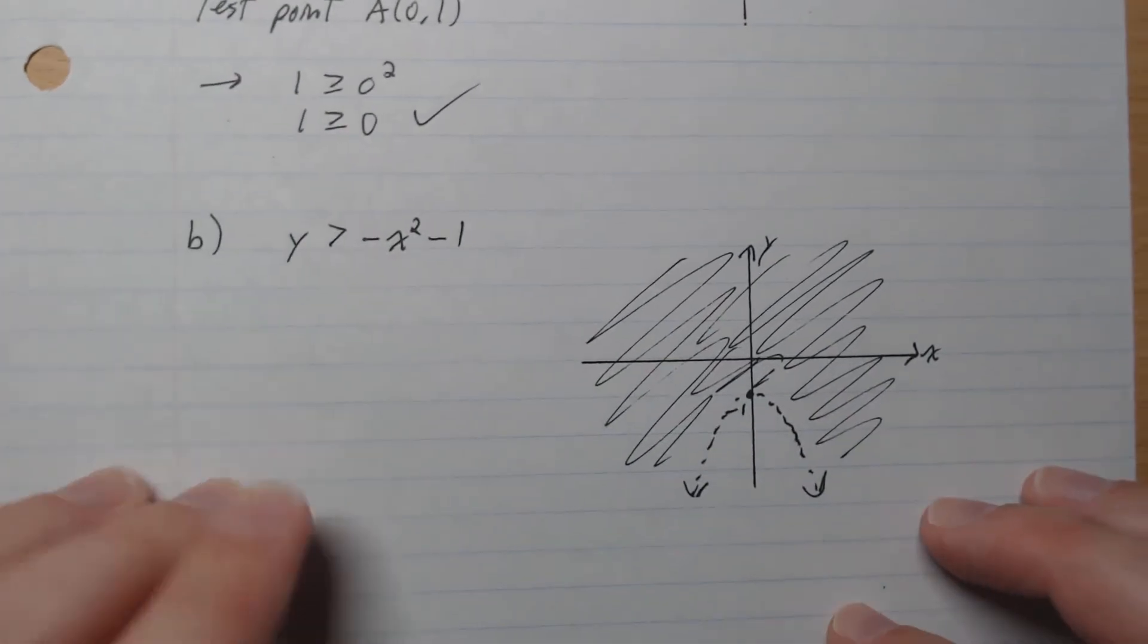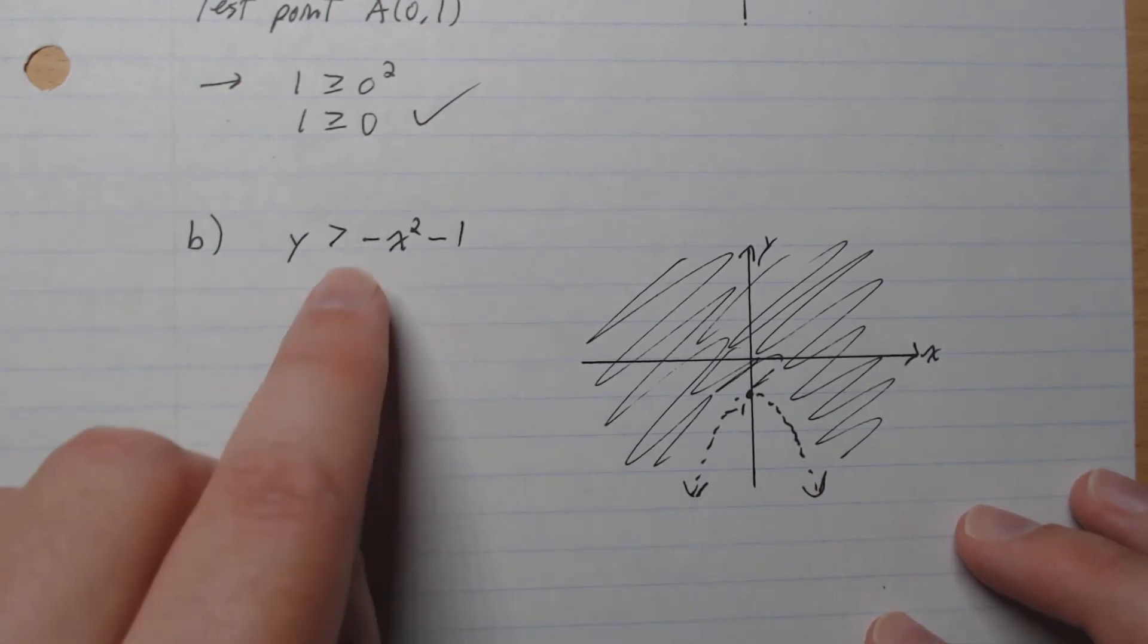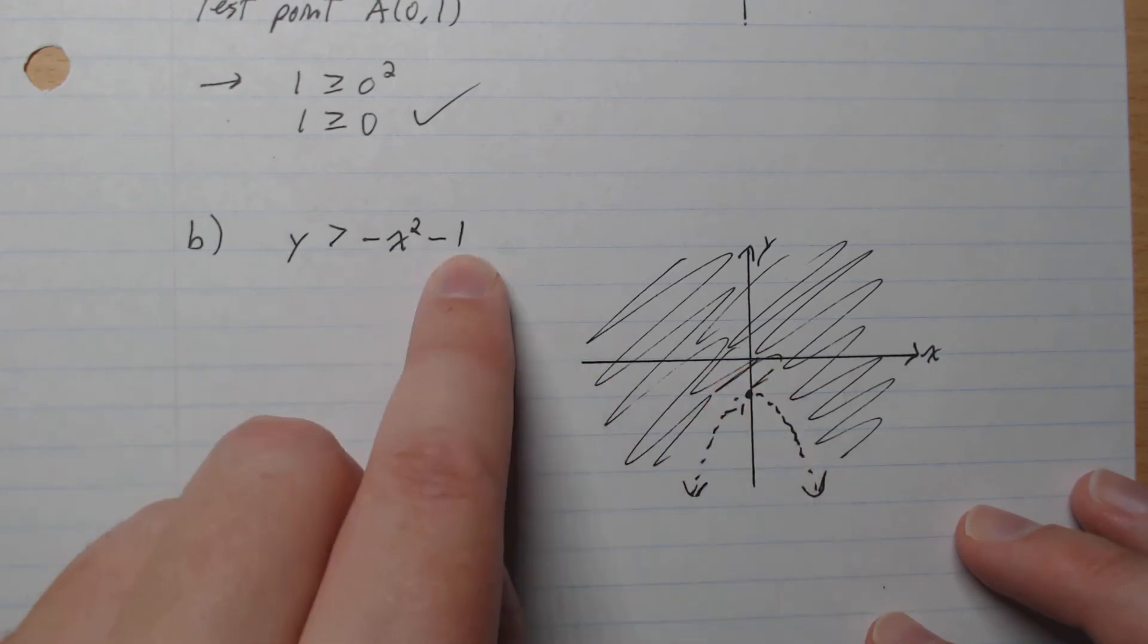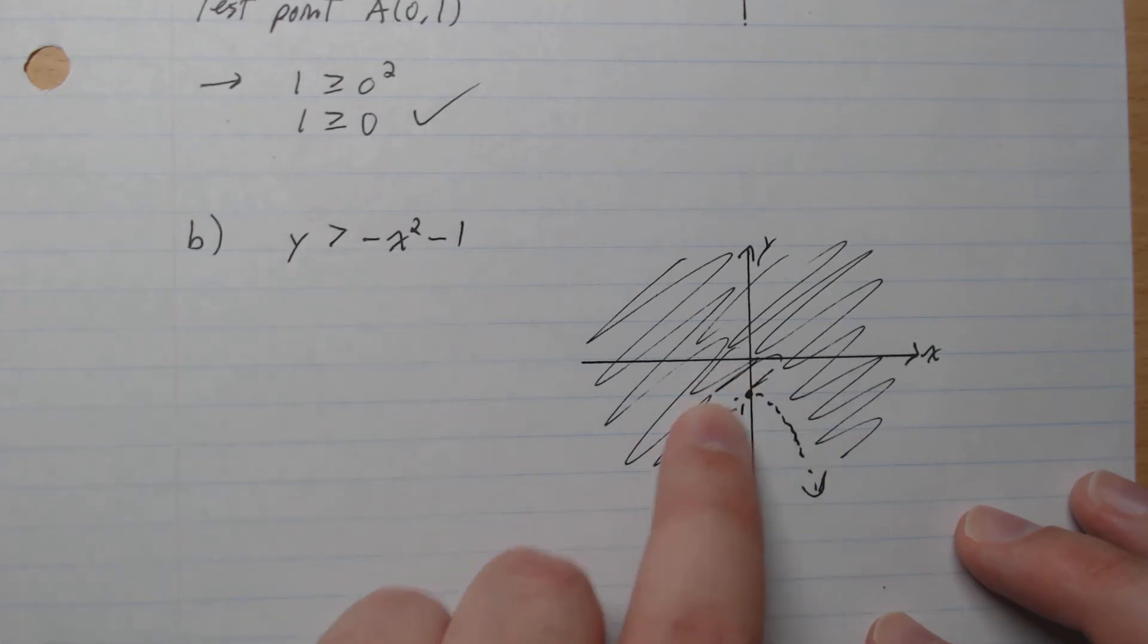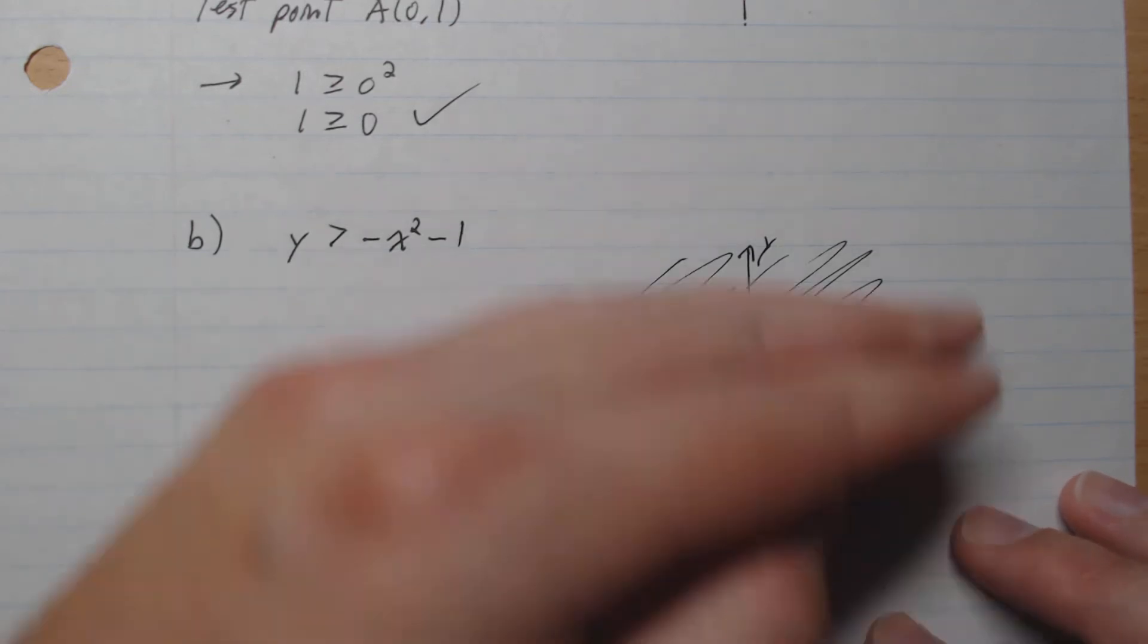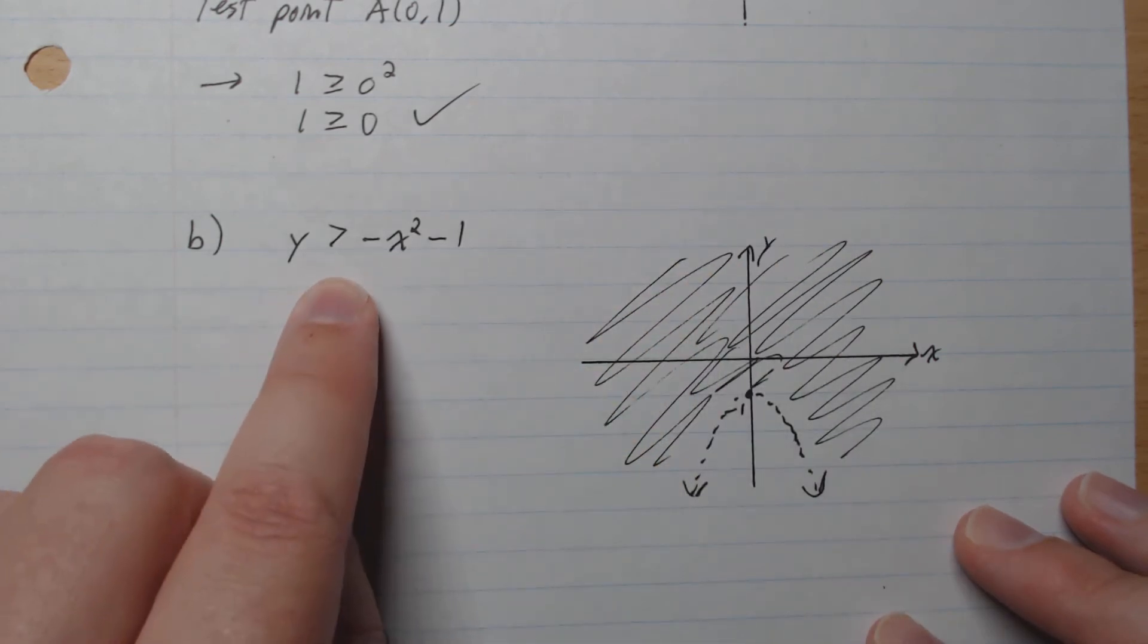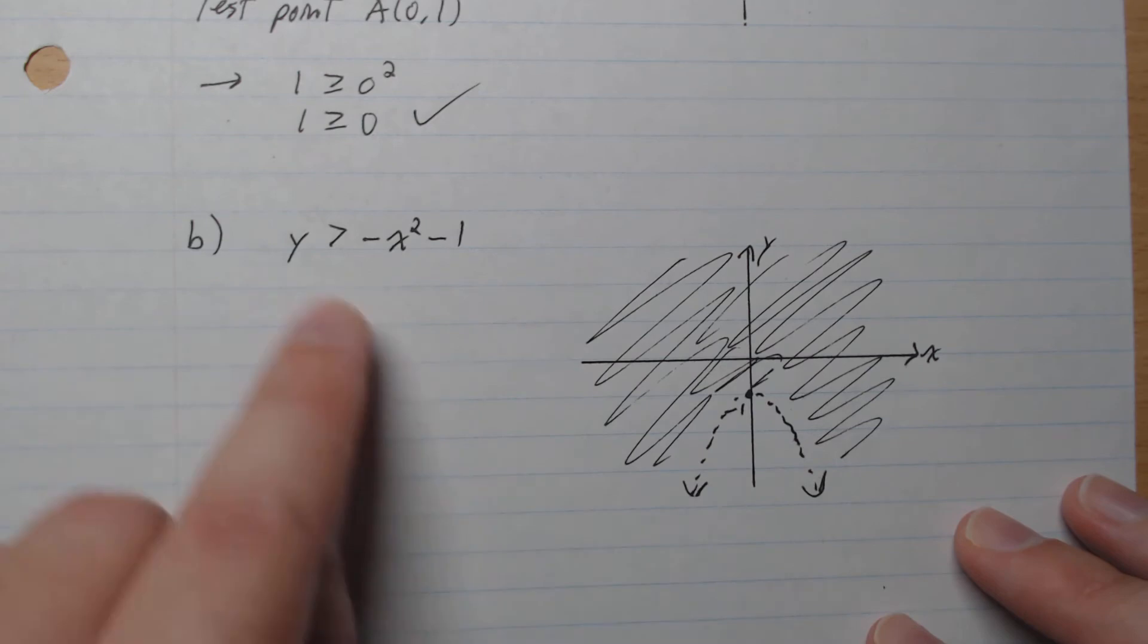B, y is greater than negative x squared minus one. So this is also easy to graph. Negative x squared and then down one, negative one like that. Y is greater than that function. So here's our function there. Y is greater than that. So that's above. So that's all of this region like that. It's not allowed to be equal, so it's dashed. The boundary line is dashed. You're not allowed to be equal to the function. It must be only above it like that.